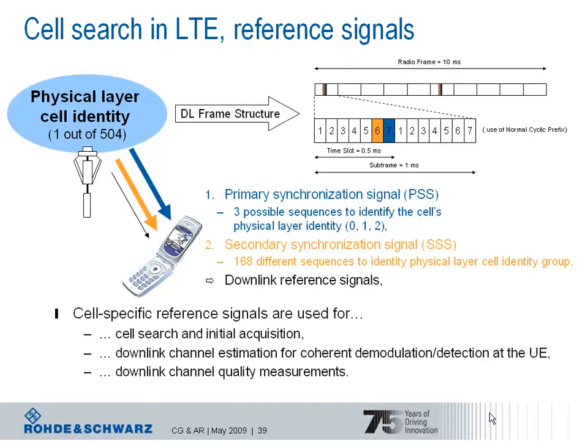In the time domain, looking at the downlink frame structure, the synchronization signals are transmitted in the first subframe — subframe number 0 — and in the sixth subframe, which is subframe number 5. The repetition rate for the synchronization signals is therefore 5 ms. The two synchronization signals are always transmitted in the first time slot of that subframe, where the primary synchronization signal occupies the last OFDM symbol and the secondary synchronization signal occupies the symbol before. The determination of the cell's identity enables the UE to examine the pseudorandom sequence used to generate the cell-specific downlink reference signals, with initialization based on the cell's identity and the cyclic prefix type — normal or extended.